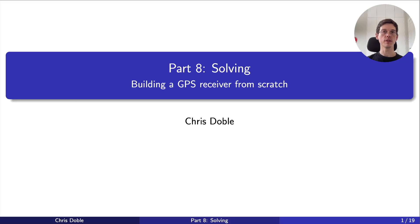This is the eighth and final video in a series where I cover everything you need to know to build a GPS receiver from scratch. In the previous video, we learned how to decode information from the satellite's navigation message. In this video, we'll learn how to use that information to determine our location.